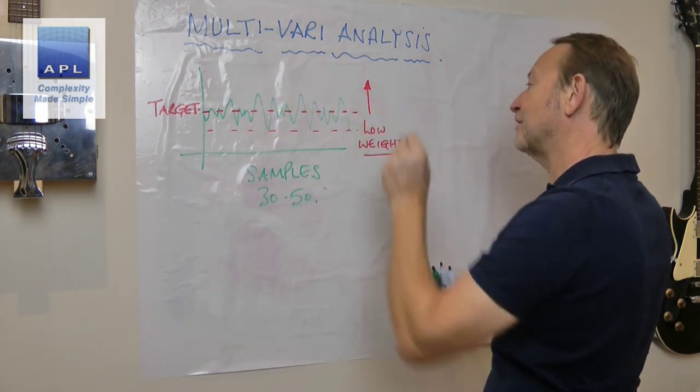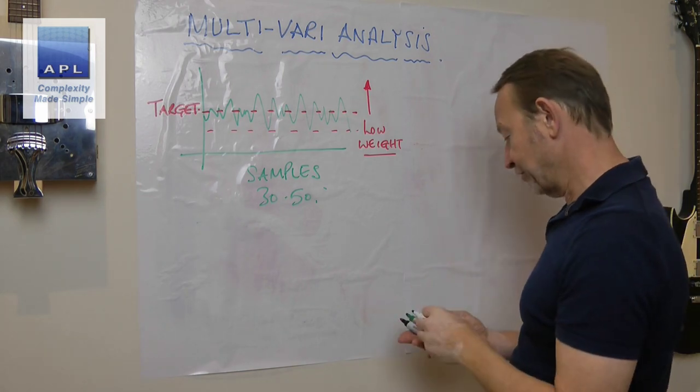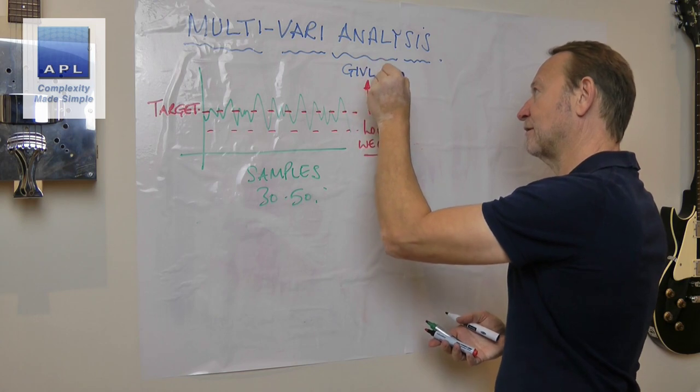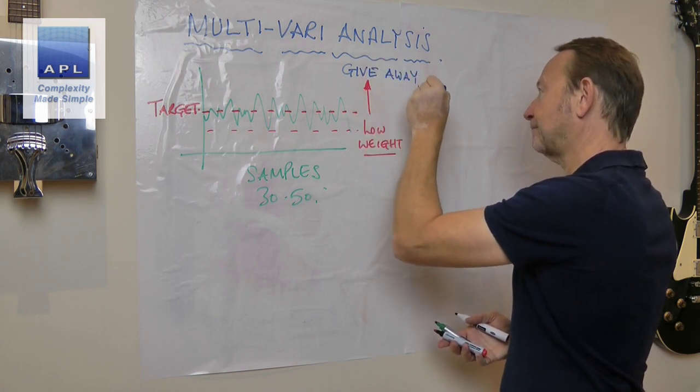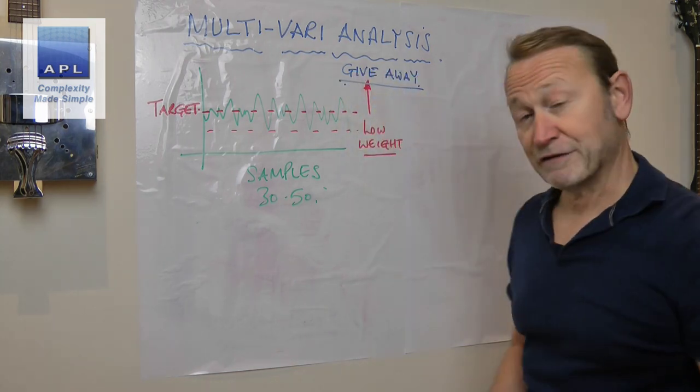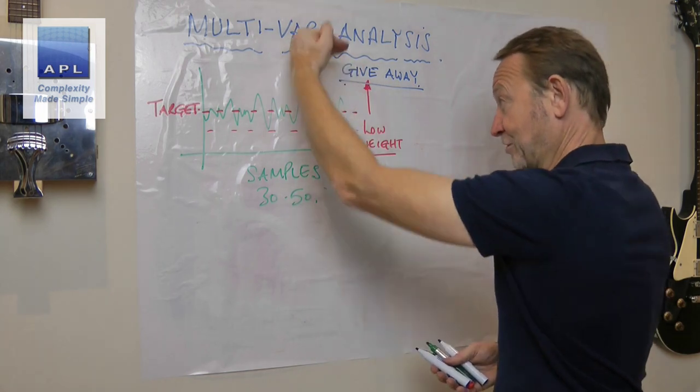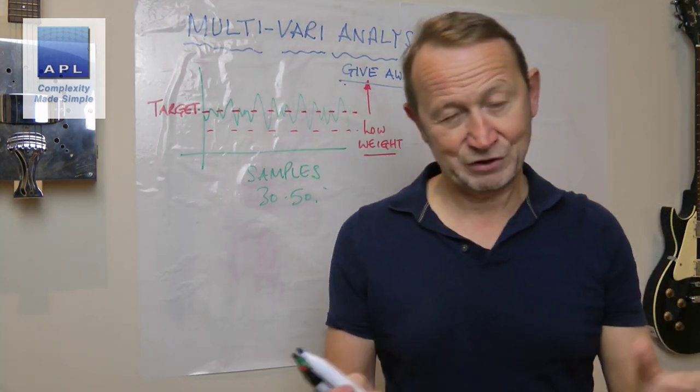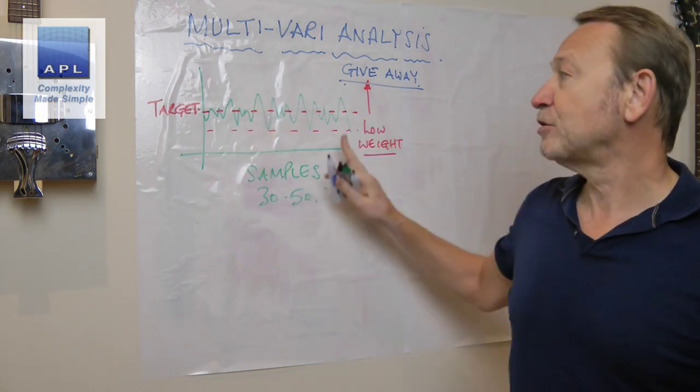What they typically do, of course, is they have a tendency to wind the setting well away from the tolerances. And what do you then do? You have a tendency to give away food, all right. In order to be safe.